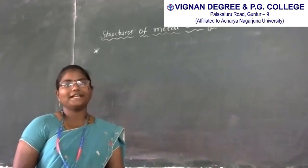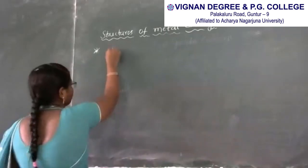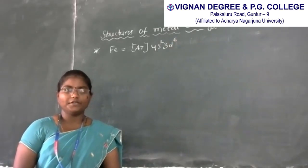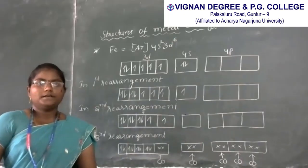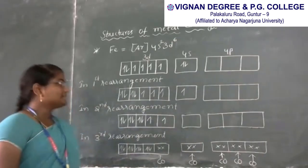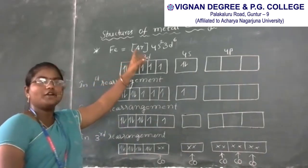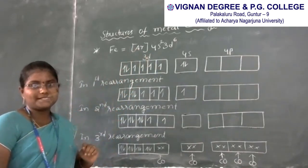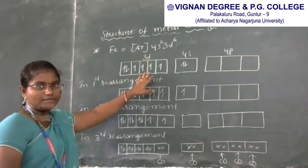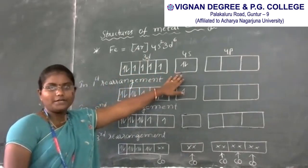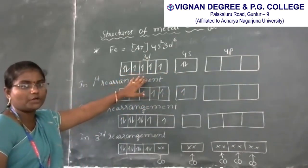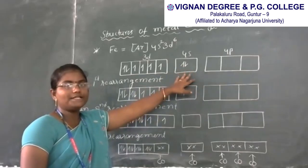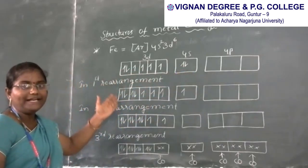The ground state electronic configuration of iron is [Ar] 4S2 3D6. In ground state there are 2 electrons in 4S and 6 electrons in 3D orbital, with further orbital 4P. In the first rearrangement, one electron from 4S is excited to its 3D orbital.